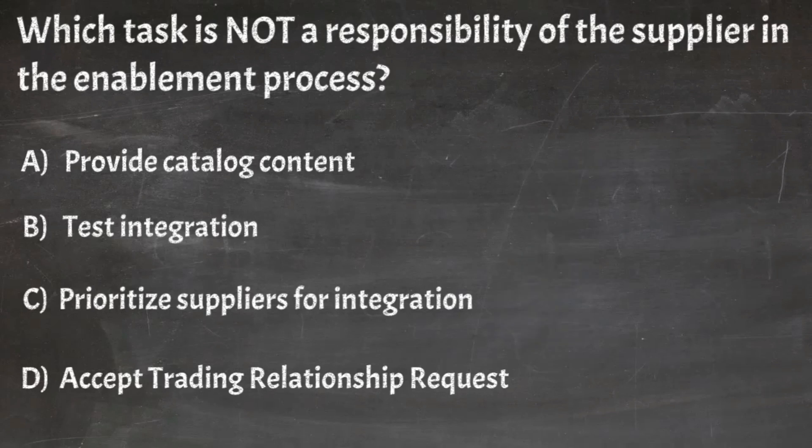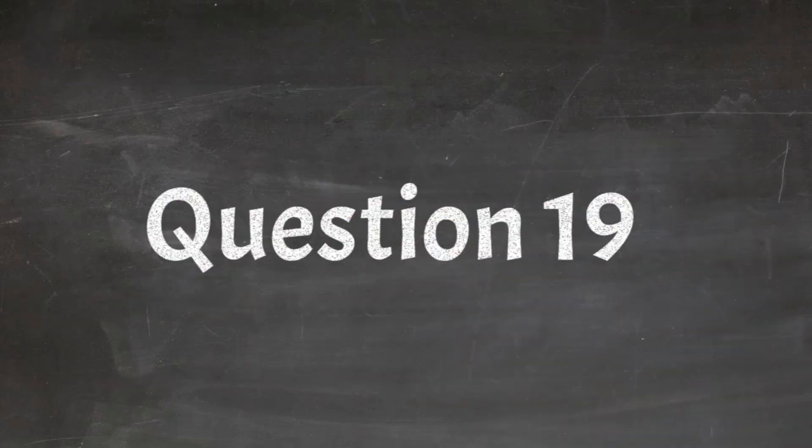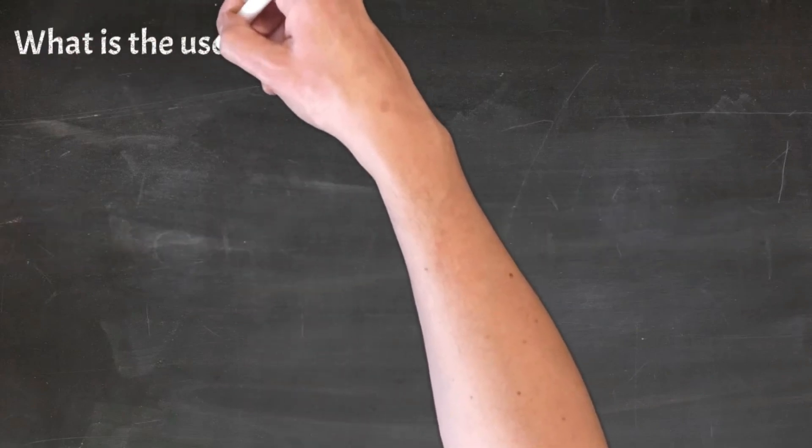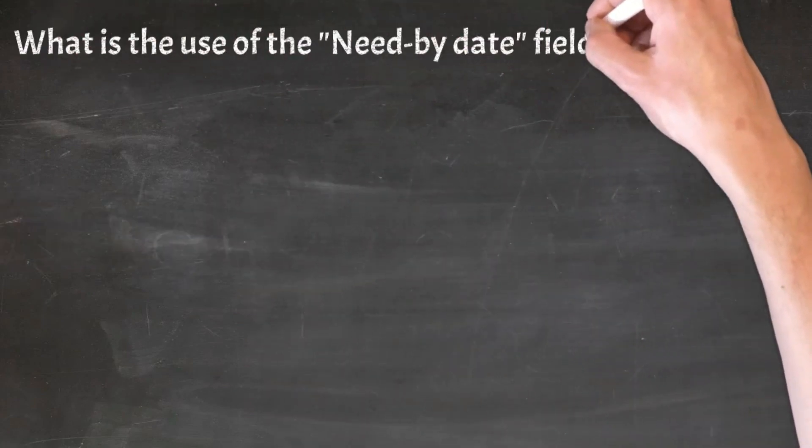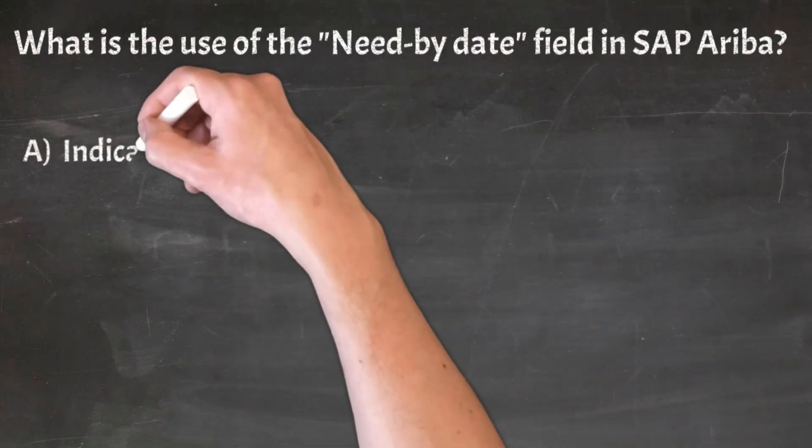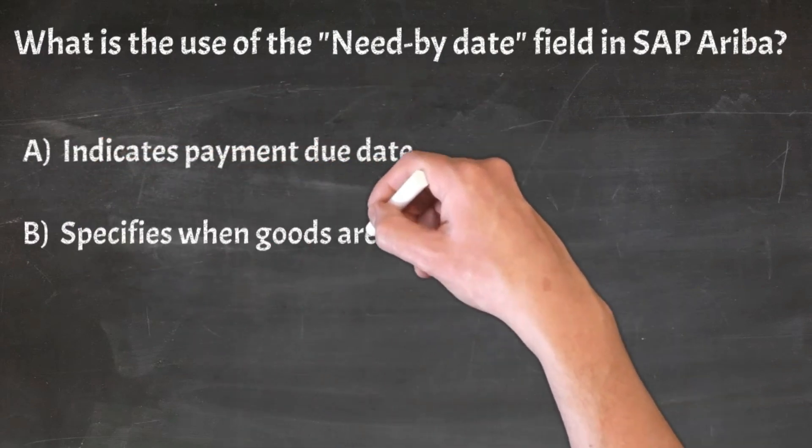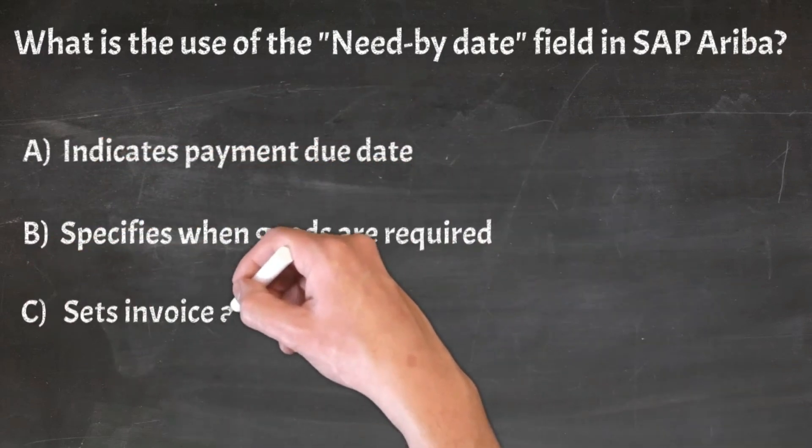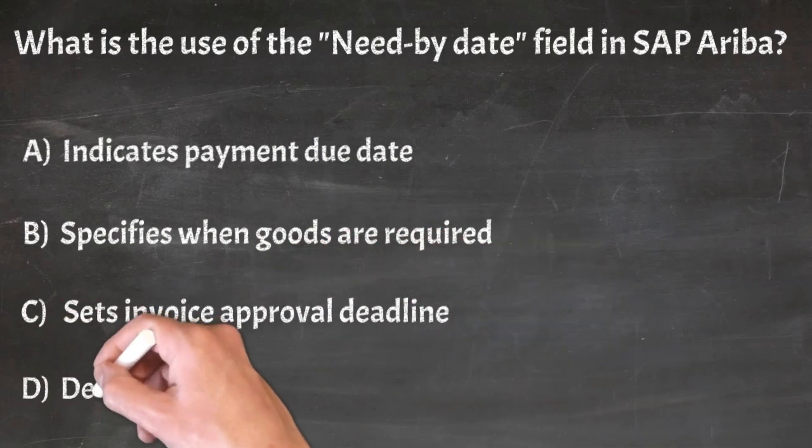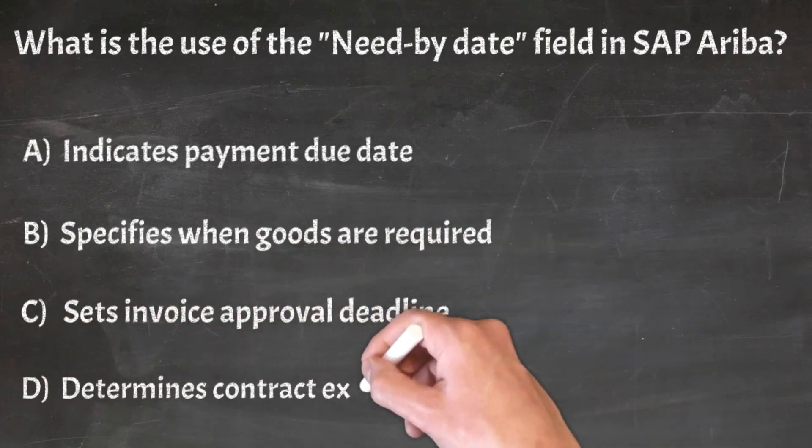Correct answer: C. Prioritize suppliers for integration. Question 19: What is the use of the need-by-date field in SAP Ariba? A. Indicates payment due date, B. Specifies when goods are required, C. Sets invoice approval deadline, D. Determines contract expiration.